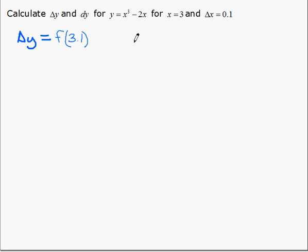So 3 plus 0.1, which is 3.1, and subtracting f of 3. In other words, delta y is equal to y2 minus y1.